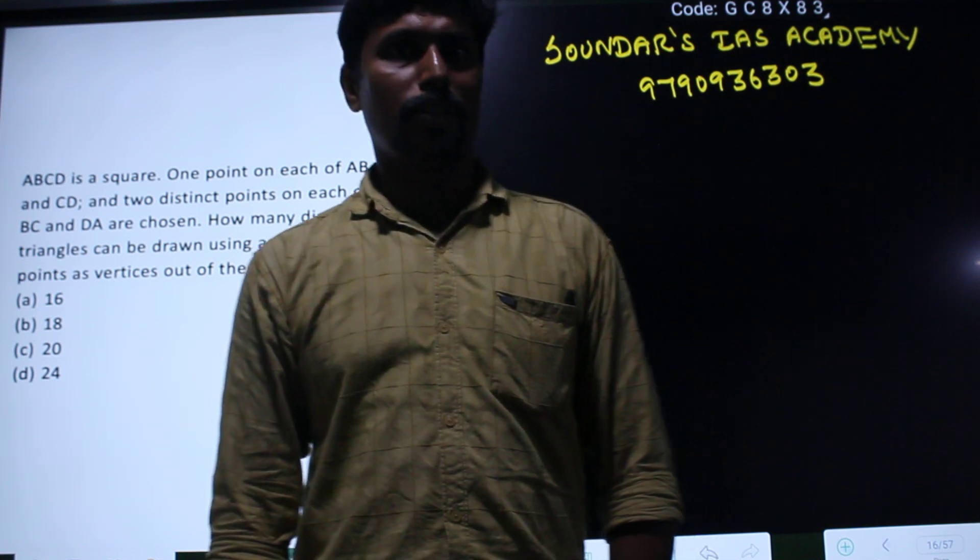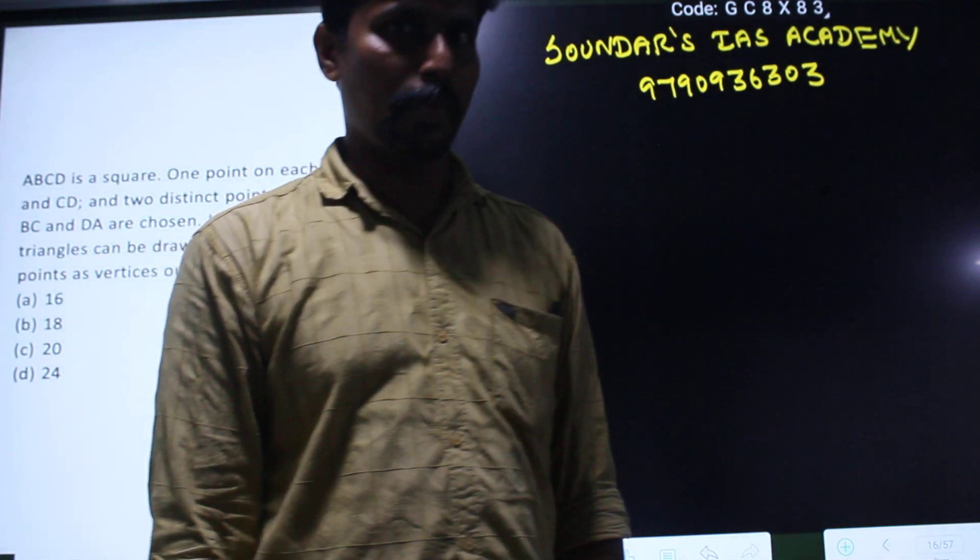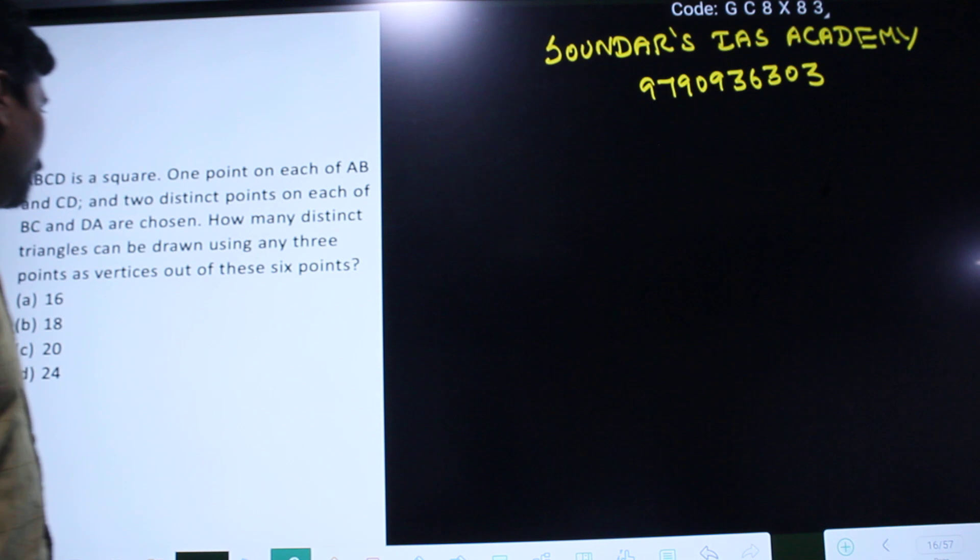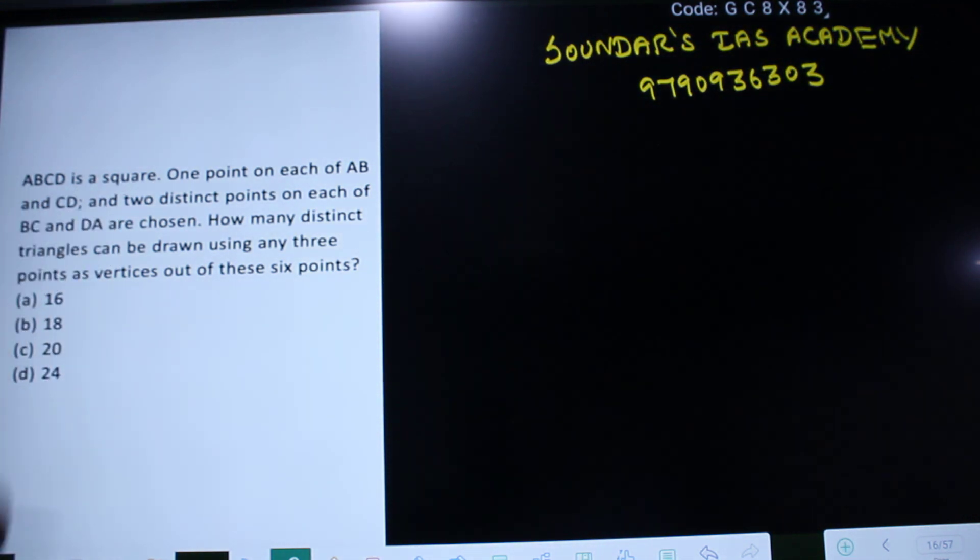UPC CSR question paper, one question that we can find a solution. ABCD is a square. One point on each of AB and CD, and two distinct points on each of BC and DA are chosen.